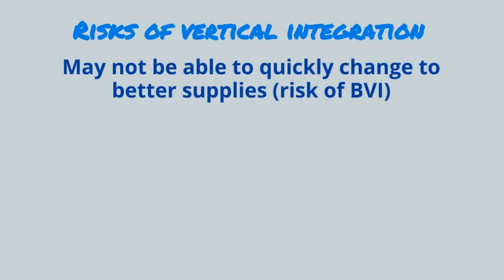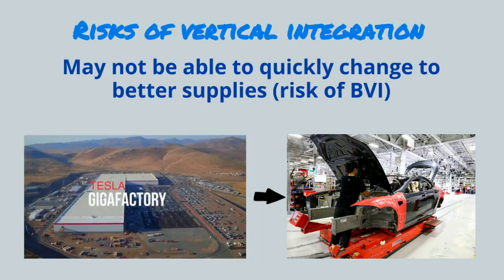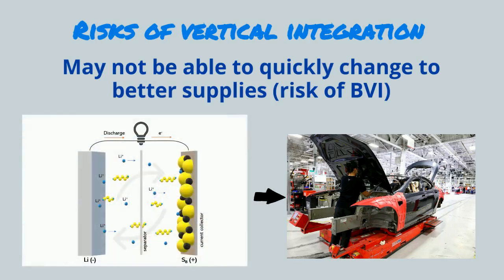If you're backward vertically integrated, you may not be able to quickly change to better supplies when they become available. For example, if you're an electric vehicle manufacturer and you own a giant battery factory, it may be harder for you to adopt lithium-sulfur battery technology when it comes out.